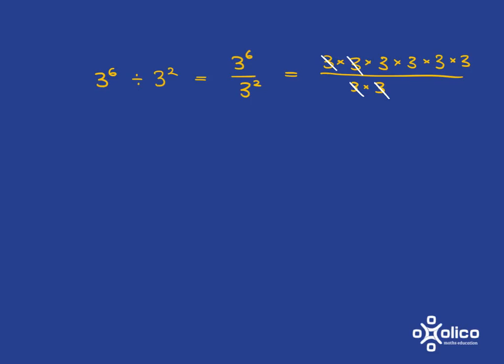And so instead of having 6 3's at the top, you've got 2 less now, so you've got 3 to the power of 4, and 3 to the power of 4 you can actually work out. 3 times 3 is 9, times 3 is 27, and times 3 again is 81.